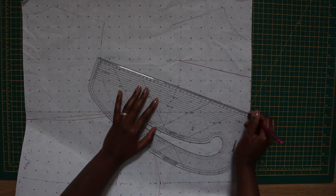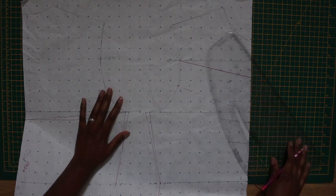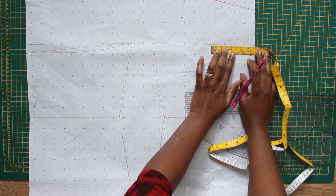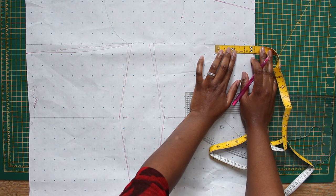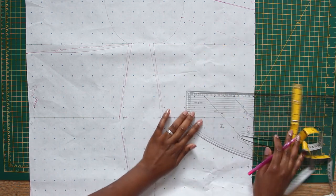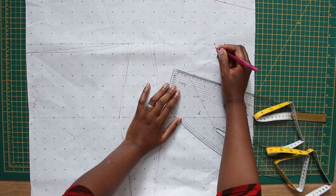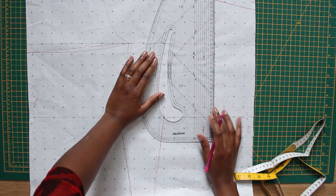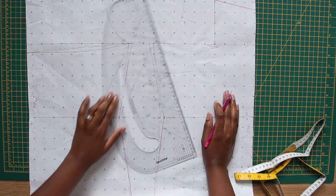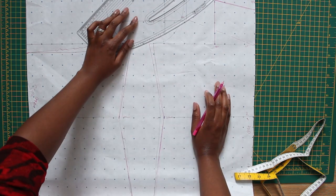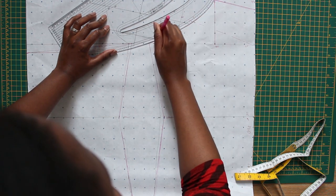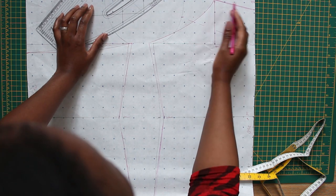At the armhole I'm gonna mark four inches from the center front. Remember that was like the apex. I'm just gonna draw a straight line and then connect that point with the armhole. So this is like our new line.